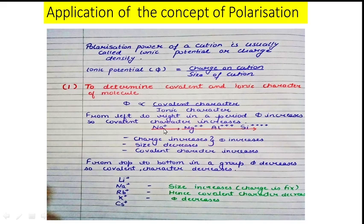For example, in the series sodium, magnesium, aluminium, and silicon, the charge is increasing. If charge is increasing, the value of phi increases because φ = charge / size. If phi increases, covalent character will increase, and if covalent character increases, the ionic character will decrease. In a particular group, from top to bottom, the value of phi will decrease because the size of the cation increases. If size increases, phi decreases, and if phi decreases, covalent character will decrease and ionic character will increase.